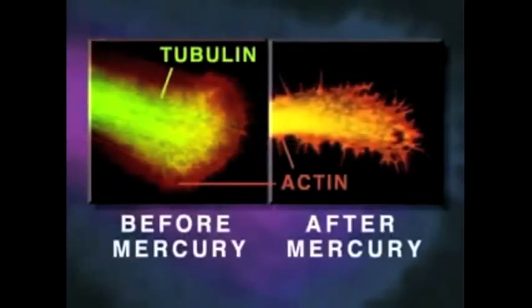Shown here is a neurite growth cone stained specifically for tubulin and actin, before and after mercury exposure. Note that the mercury has caused disintegration of tubulin microtubule structure.